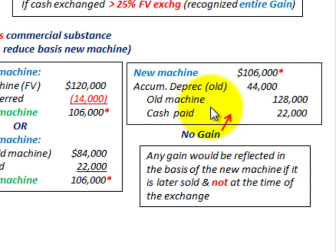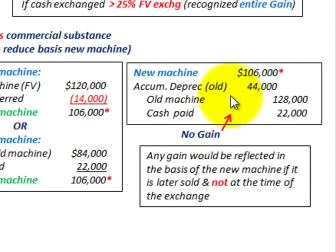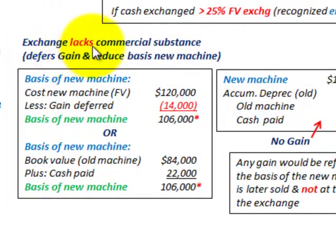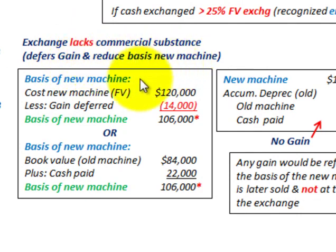When our exchange lacked commercial substance, we didn't include any gain. The key takeaway from this example is how the exchange lacking commercial substance requires us to defer the gain and reduce the basis of the new machine rather than recognizing the gain at the time of exchange.